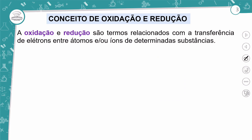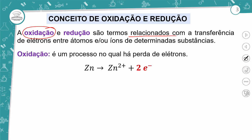A oxidação e redução são termos relacionados com a transferência de elétrons entre os átomos e/ou entre os íons de determinadas substâncias. Quando a gente fala que uma determinada substância ou elemento oxidou, estamos falando de perda de elétrons. A oxidação é um processo no qual há perda de elétrons — aquela substância perdeu elétrons.